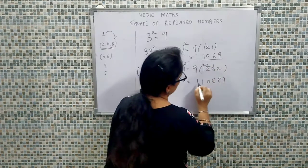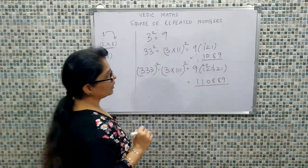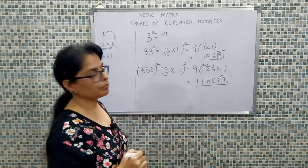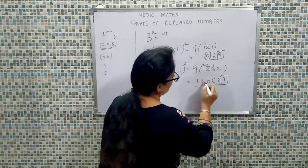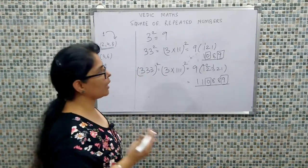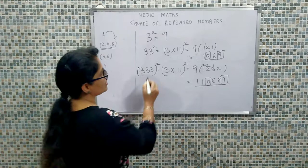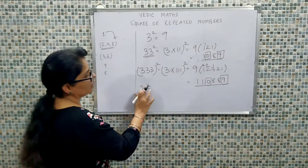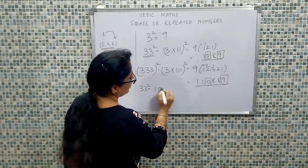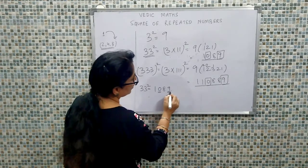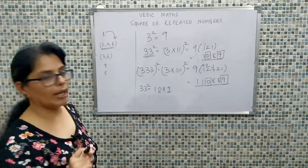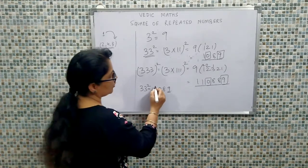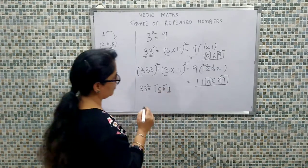Now comparing 33 squared and 333 squared, we find that nine and zero are common fixed positions. So the pattern is: nine and zero are fixed. Agar humara 33 ka square nikaalna hai, to hum zero and nine fix kar dete hain — these two positions are fixed. Yahaan bacha ek three, us ek three ke corresponding hum likhenge ek bar one aur ek bar eight.